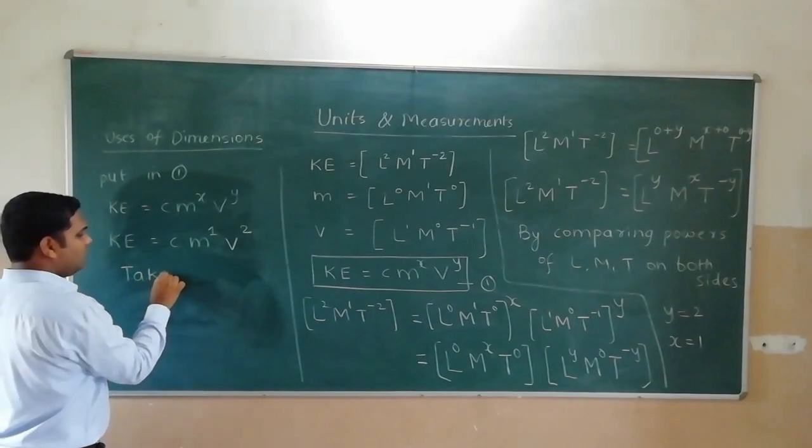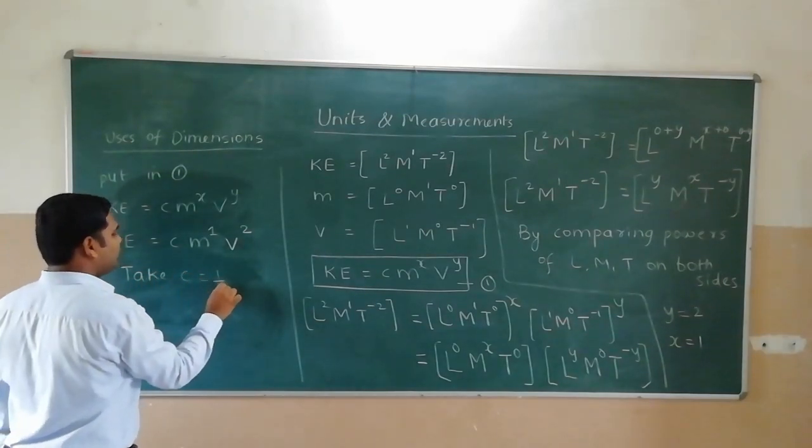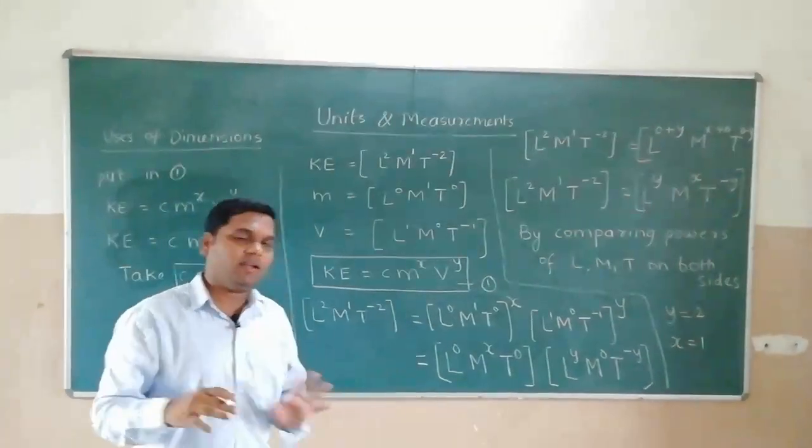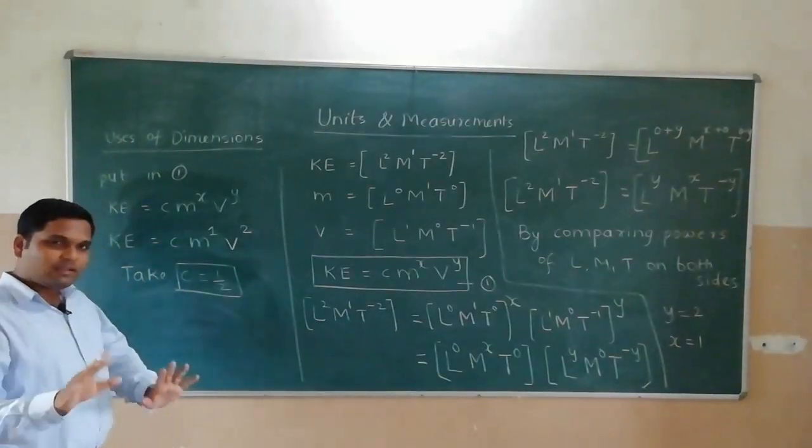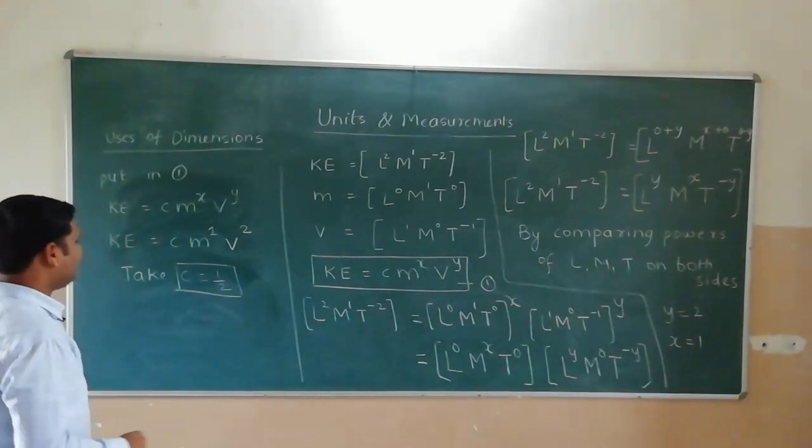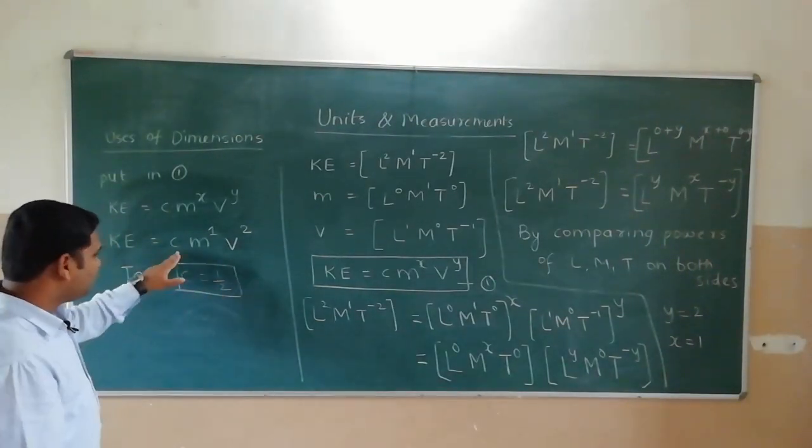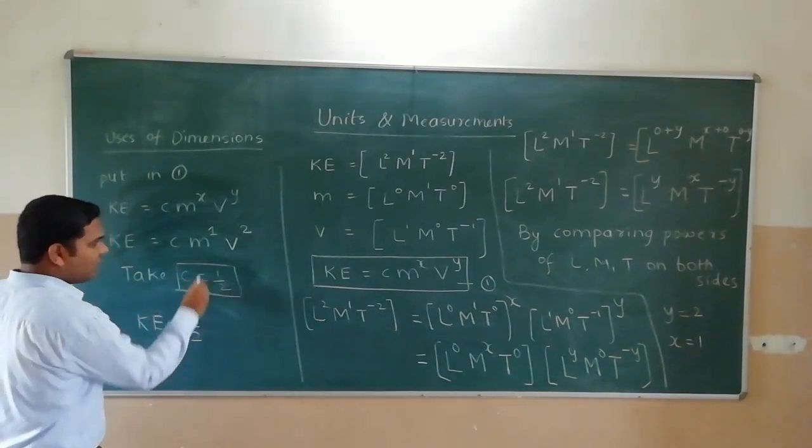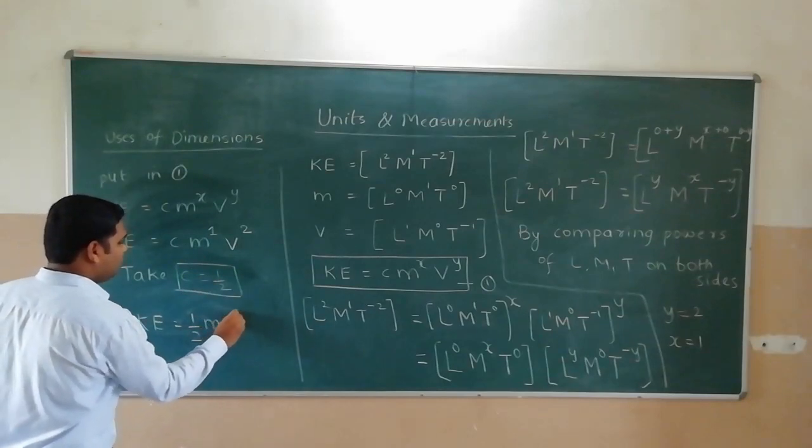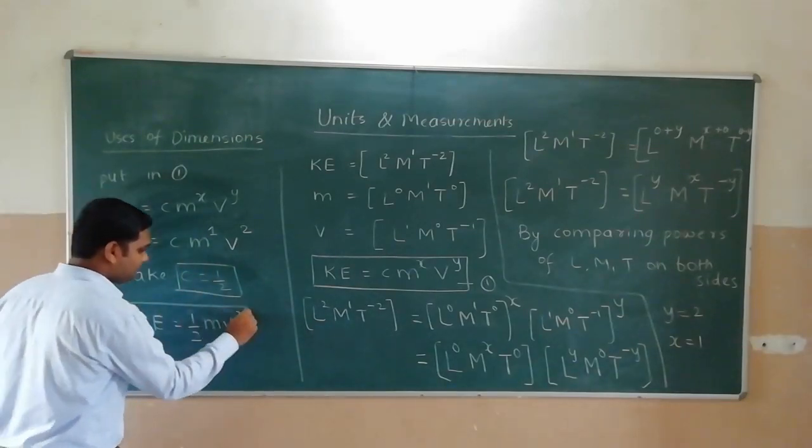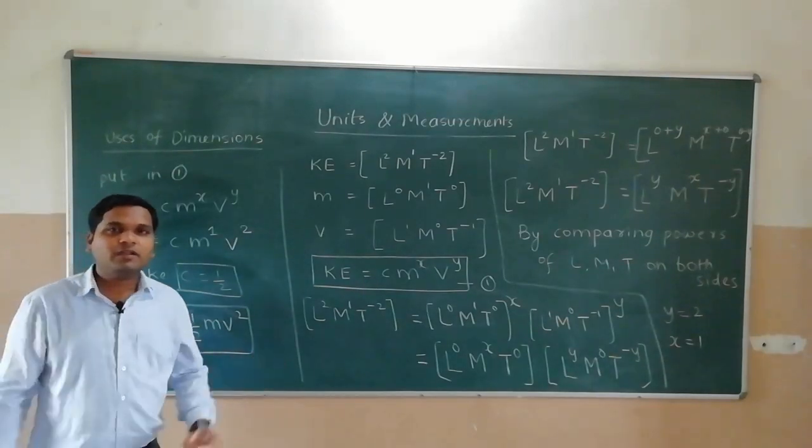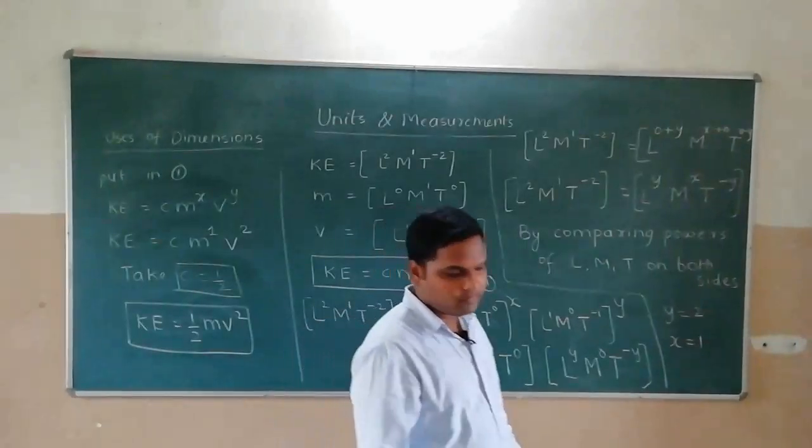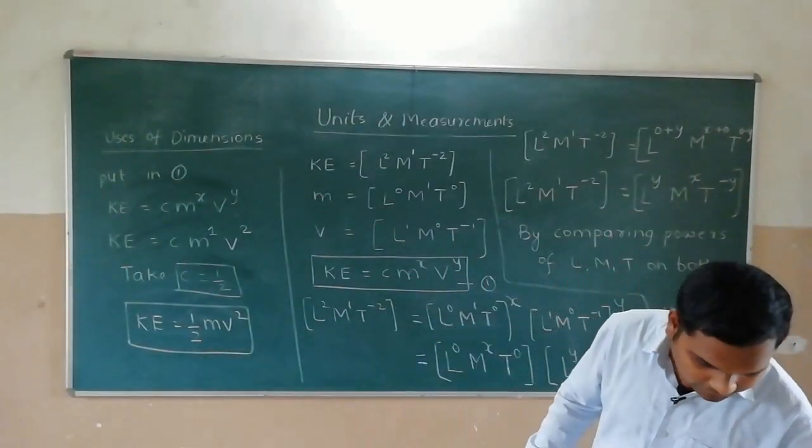Question mein you will be given, take constant value is equal to 1 by 2. This will be given in question. You will not remember. If you have not given it, you will be given it. So, I am taking that C is C value 1 by 2. Here substitute it. So, kinetic energy is equal to constant 1 by 2 into mass m into v squared. The formula, kinetic energy is half mv square, which is the derivation that was the formula we have derived.